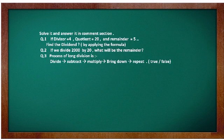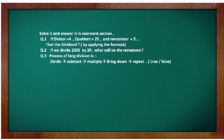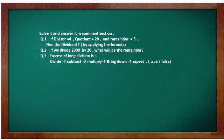Now we have come to the end of the tutorial class. I have arranged a few questions for you. Solve them and write your answers in my comment section. Question 1: If divisor = 4, quotient = 20 and remainder = 5, find the dividend by applying the formula. Question 2: If we divide 2000 by 20, what will be the remainder? Question 3: The process of long division is — Divide, Subtract, Multiply, Bring down, then Repeat. True or false?